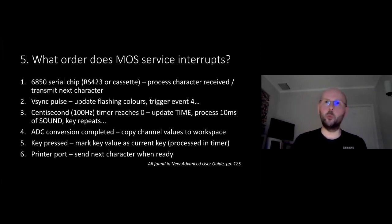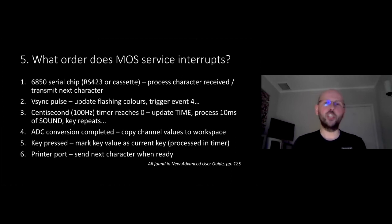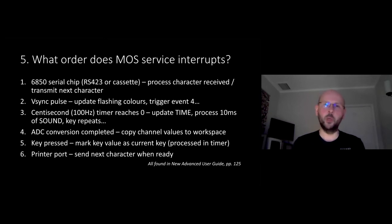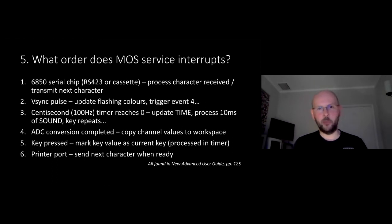At the end of the service routine, it does another indirect jump through the IRQ2 vector, stored at 0206. Following that code shows it simply loads the accumulator back from zero page and executes RTI, so the rest of the program continues where it left off, none the wiser. Understanding what order the OS services interrupts is important if you want to write your own handlers - whether you want to play nicely with the OS, add things alongside it, or shut it out entirely and take over the whole machine.